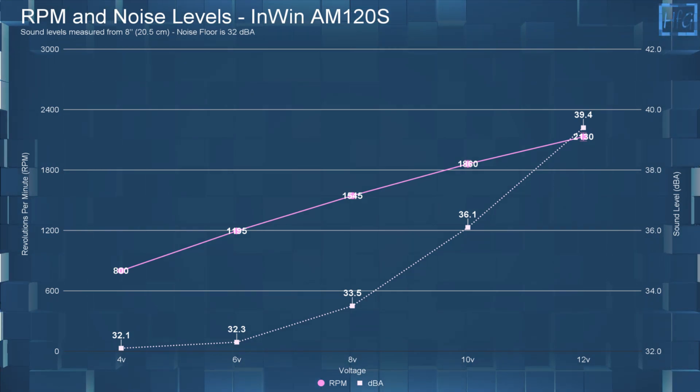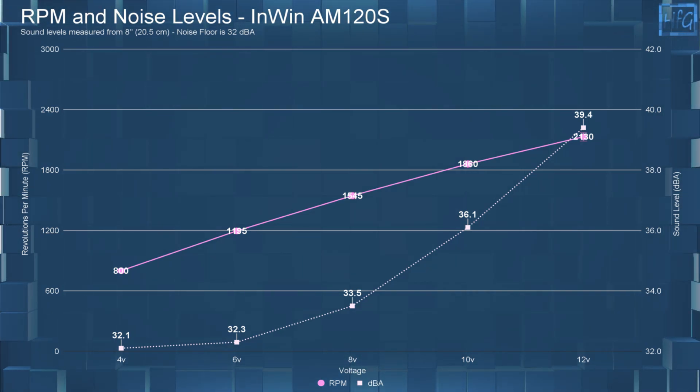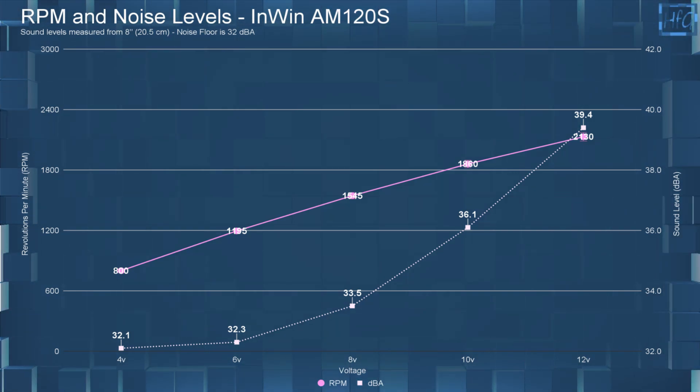Okay, starting with the DBA and RPM. At 4 volts, the AM120S had a DBA of 32.1 and an RPM of 800. At 6 volts, the sound level went up to 32.3 DBA with an RPM of 1195. At 8 volts, the DBA went up to 33.5 with an RPM of 1545. At 10 volts, the sound level went up to 36.1 and had an RPM of 1860. Finally, at 12 volts, the DBA was at 39.4 and that had an RPM of 2130. Okay, now for the sound recordings at each of these voltages, but first the ambient room noise is for your reference.